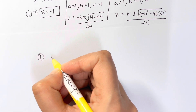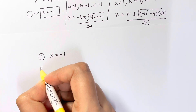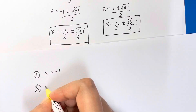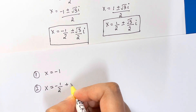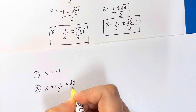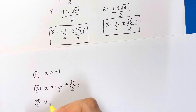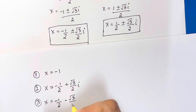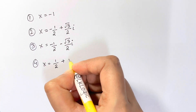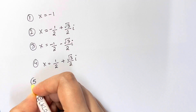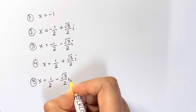Writing down all five values: x₁ = -1, x₂ = -1/2 + (√3/2)i, x₃ = -1/2 - (√3/2)i, x₄ = 1/2 + (√3/2)i, and x₅ = 1/2 - (√3/2)i.